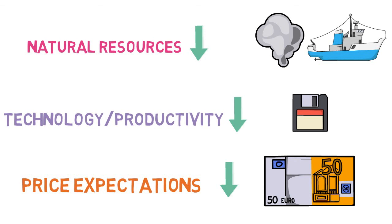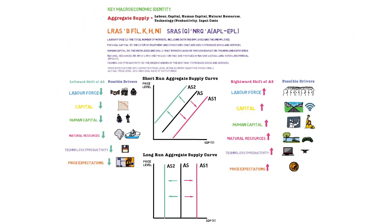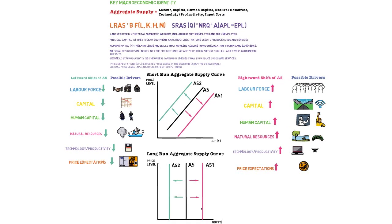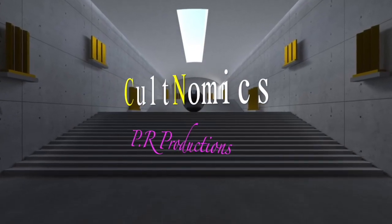So, once again, the summary of all these is a left and rightward shift of aggregate supply depending on the underpinning components of short and long run supply. I hope you come back to Cultnomics soon — bye for now.